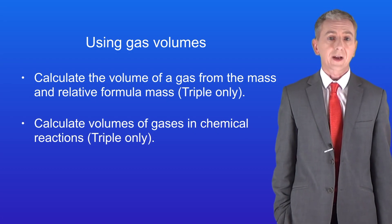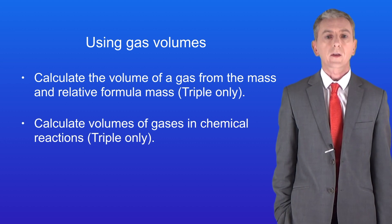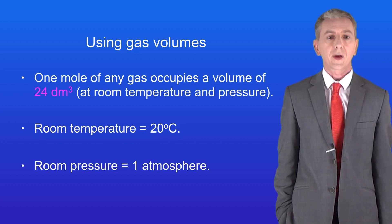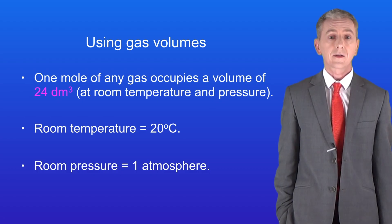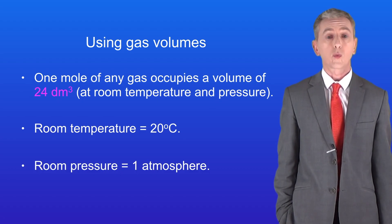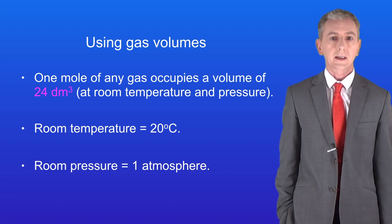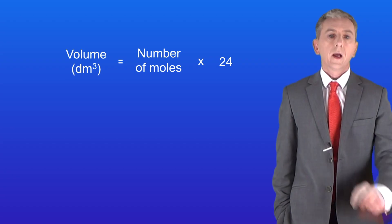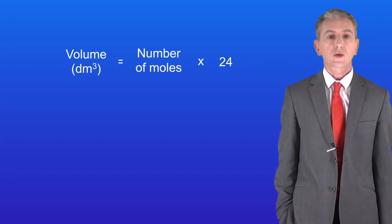Lots of chemical reactions involve gases and so far we've not really looked at these. Here's the first key fact that you need to learn: one mole of any gas occupies a volume of 24 decimetres cubed at room temperature and pressure. Room temperature is considered to be 20 degrees Celsius and room pressure is 1 atmosphere. We can use this fact to calculate the volume of a gas using this equation: the volume in decimetres cubed is the number of moles multiplied by 24.